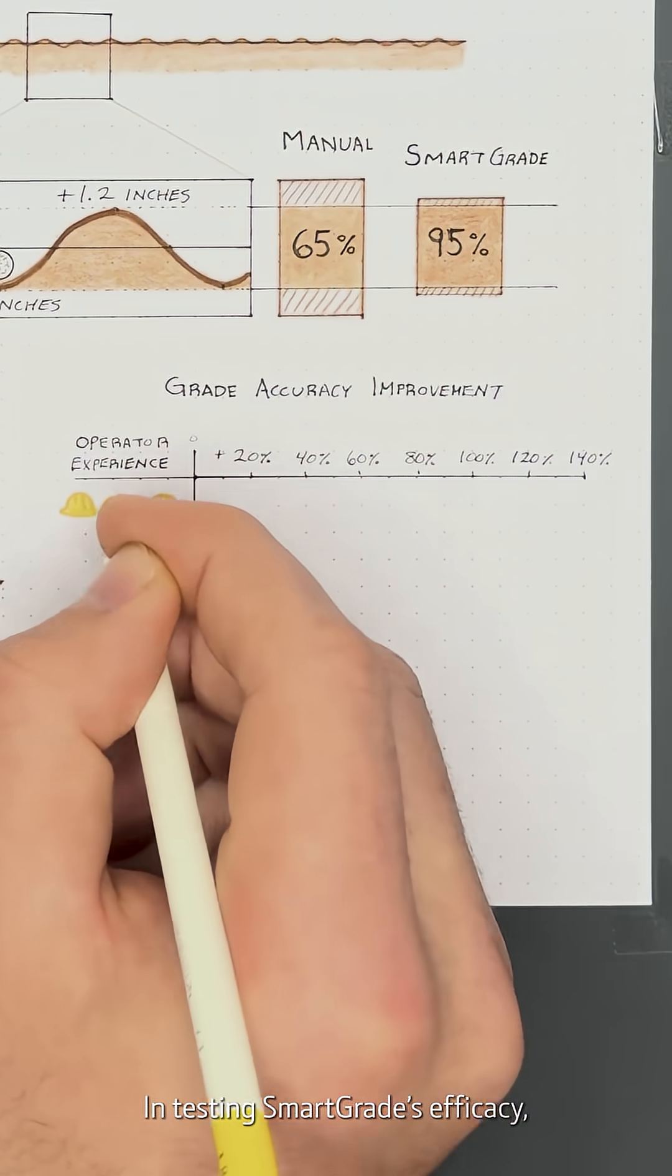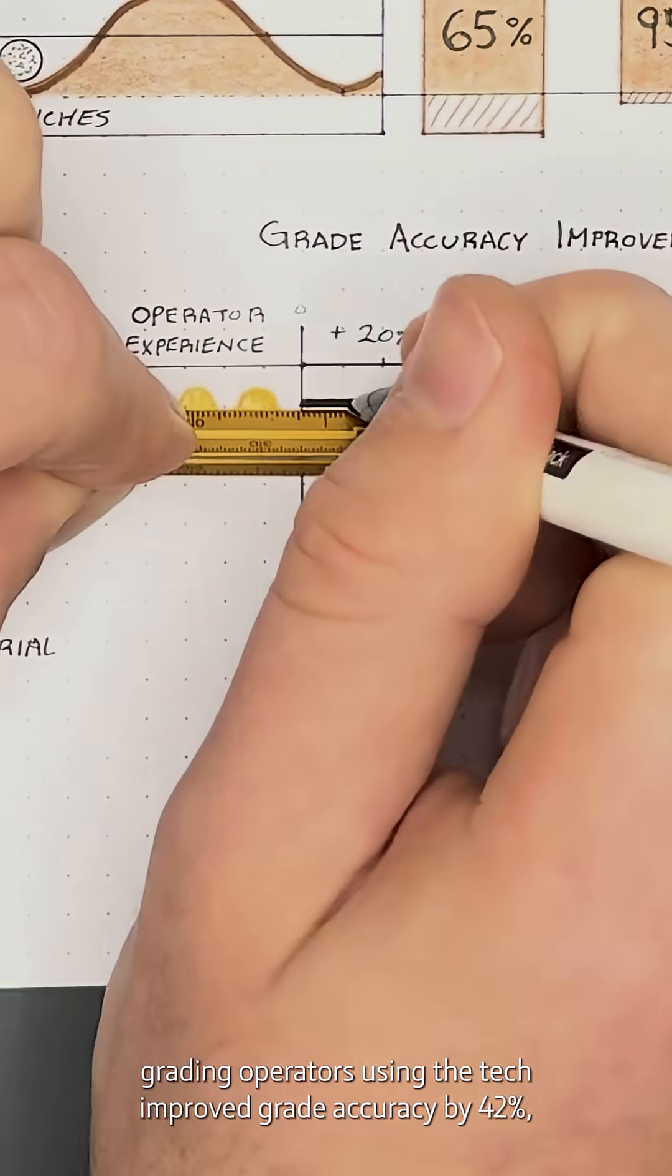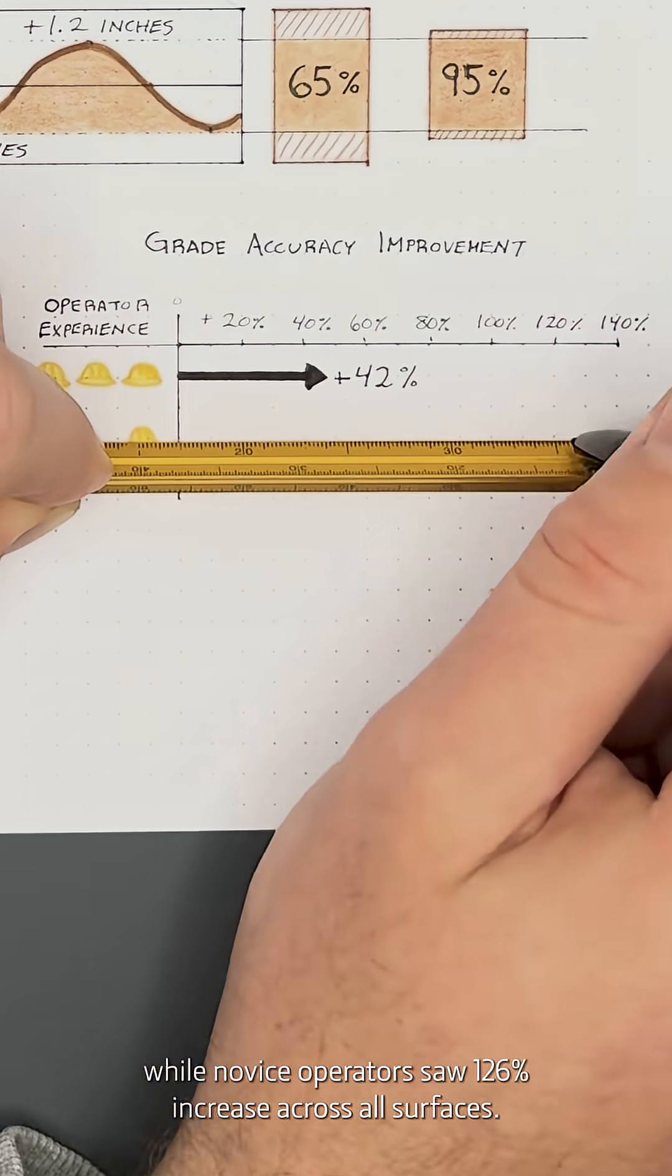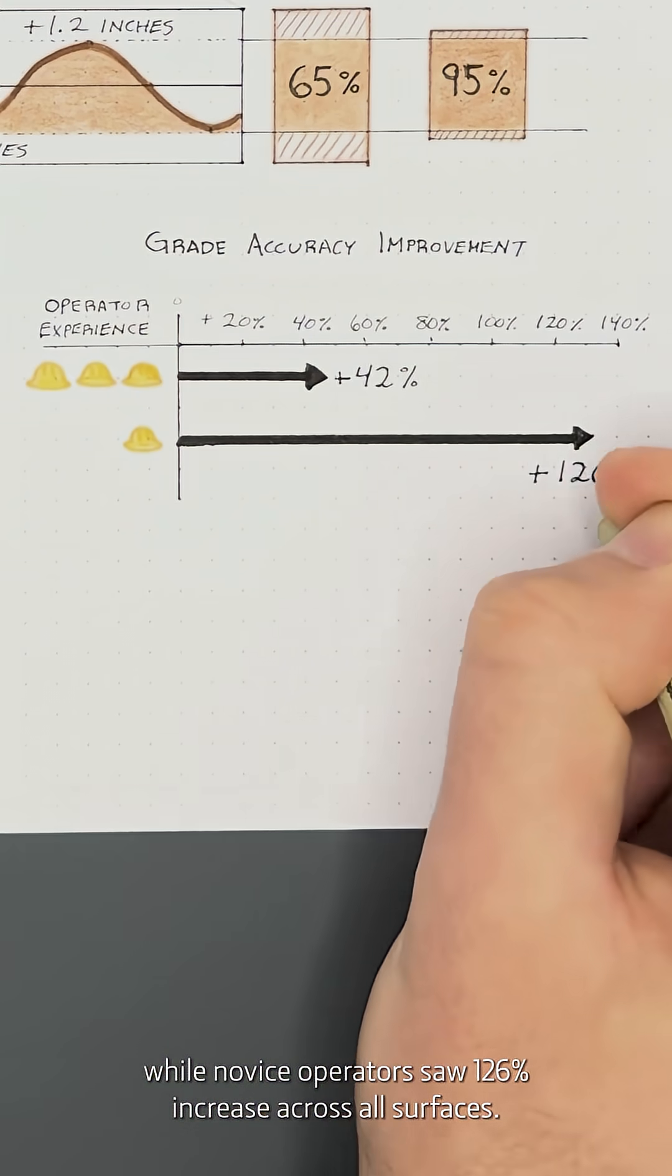This tech is also helping with labor shortages. In testing SmartGrade's efficacy, Deere found that experienced grading operators using the tech improved grade accuracy by 42%, while novice operators saw a 126% increase across all surfaces.